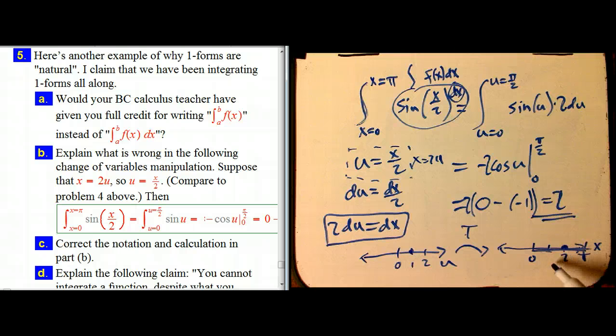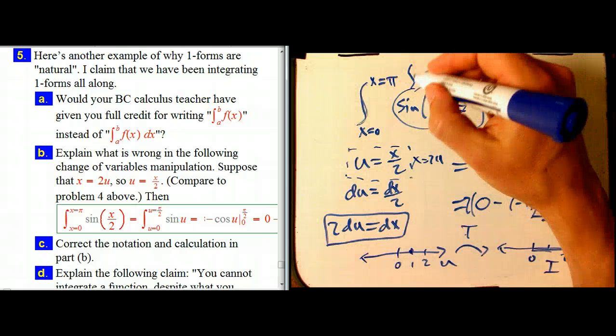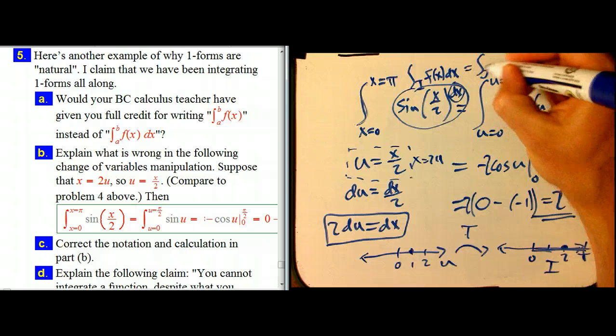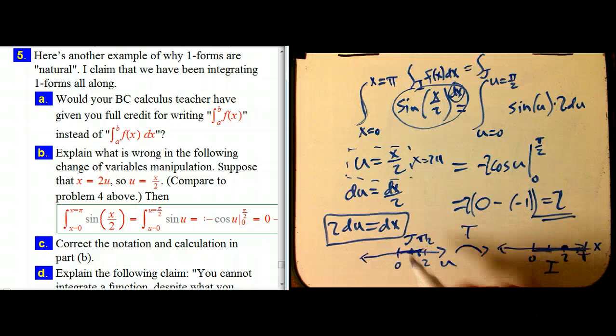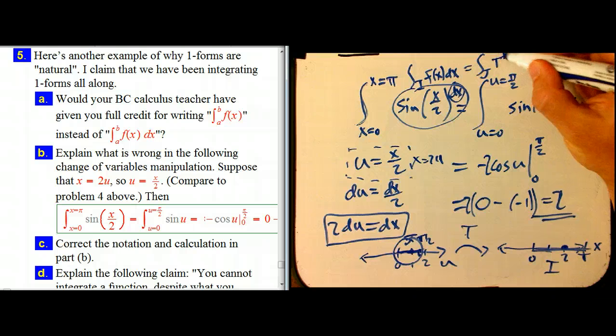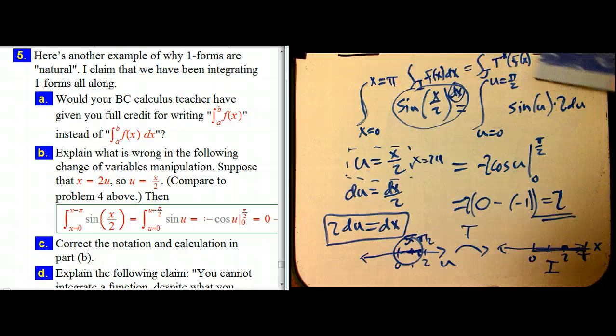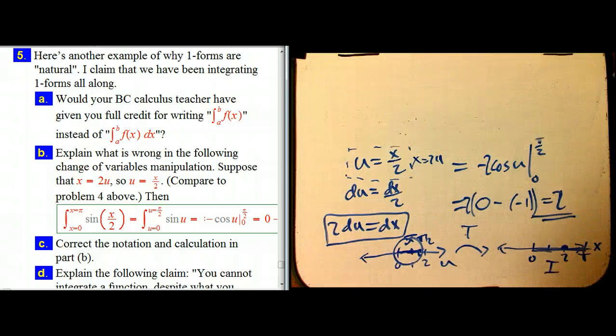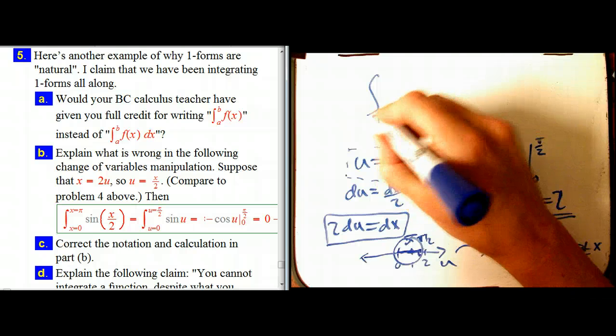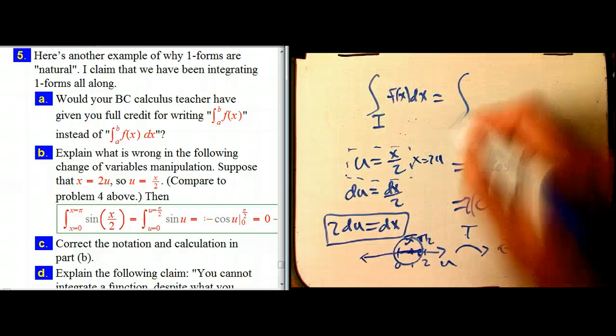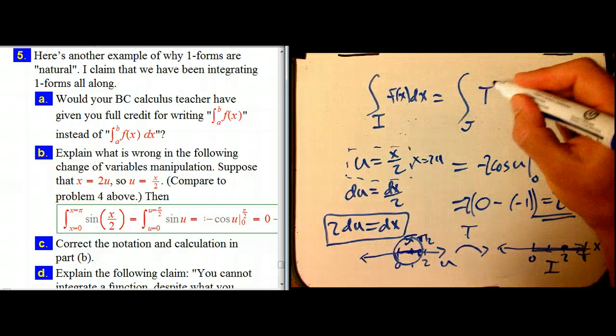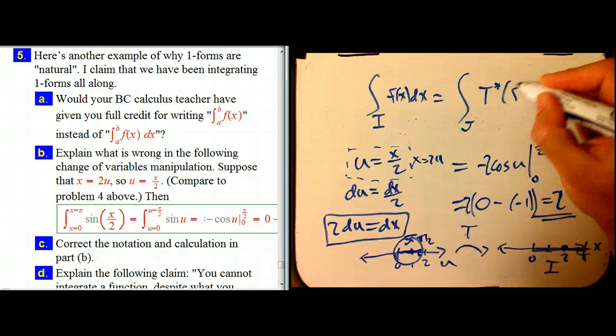Is the integral over j, that's 0 to π over 2, let's call that the corresponding interval here, of t upper star of f of x dx. The fancy way to say it is the integral over i, which is 0 to π, of this differential form, is the integral over this new corresponding interval of t upper star f of x dx.